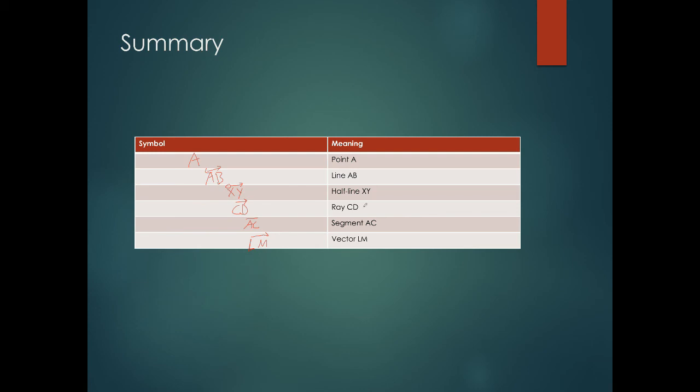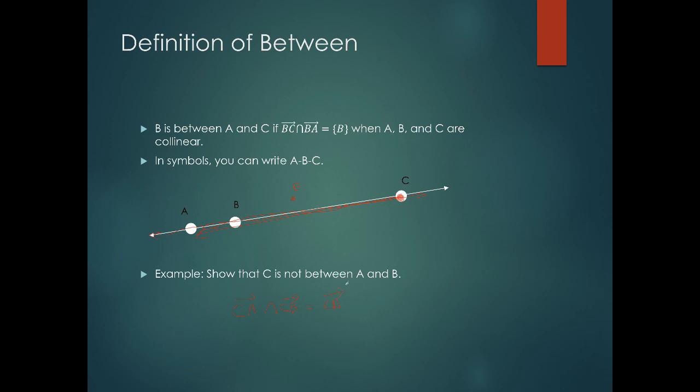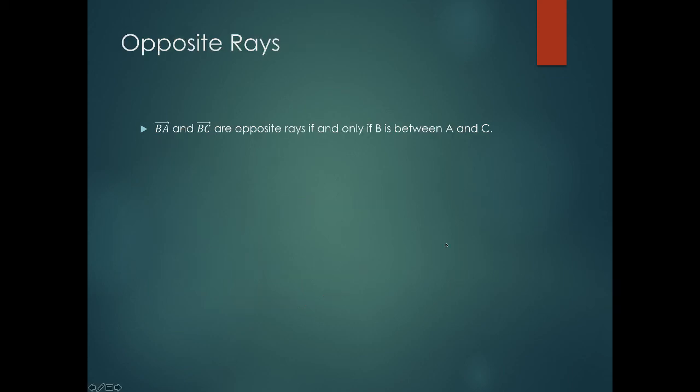That's the conclusion of this lesson. Here's another term: opposite rays. Ray BA and ray BC are opposite rays if and only if B is between A and C.